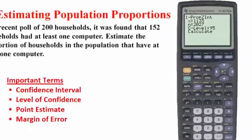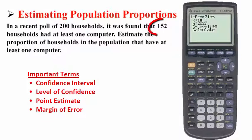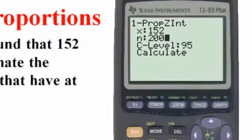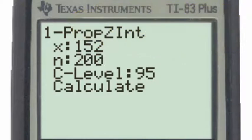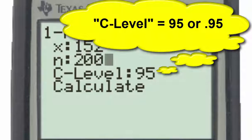To do that, we can go to the letter A and simply press enter. The input into the TI-83 will be 152 for x, which corresponds to the households in our sample that had at least one computer, and n is 200, which represents the sample size of 200 households that we used in this survey. The C-level is the confidence level. We assume the confidence level or C-level to be 95 percent if it is not given in the problem.